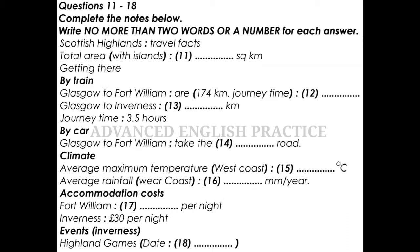There are also two main options by road. You can take either the A9, up through Stirling and Perth, and then on to Inverness. Or else, on the west, there's the A82, which runs up to Fort William and then, if you want, on to Inverness.